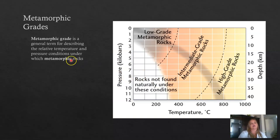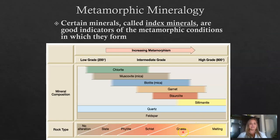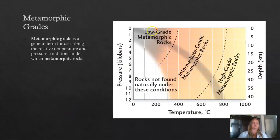Metamorphic rocks can be separated into low grade, intermediate grade, and high grade depending on the crystals present and the pressure, temperature, and depth conditions under which they formed. High grade metamorphic rocks form at the highest pressure, highest temperature, and greatest depth — gneiss is the highest grade of the four foliated rocks. Slate is the lowest grade, forming under lower pressure, temperature, and depth conditions.